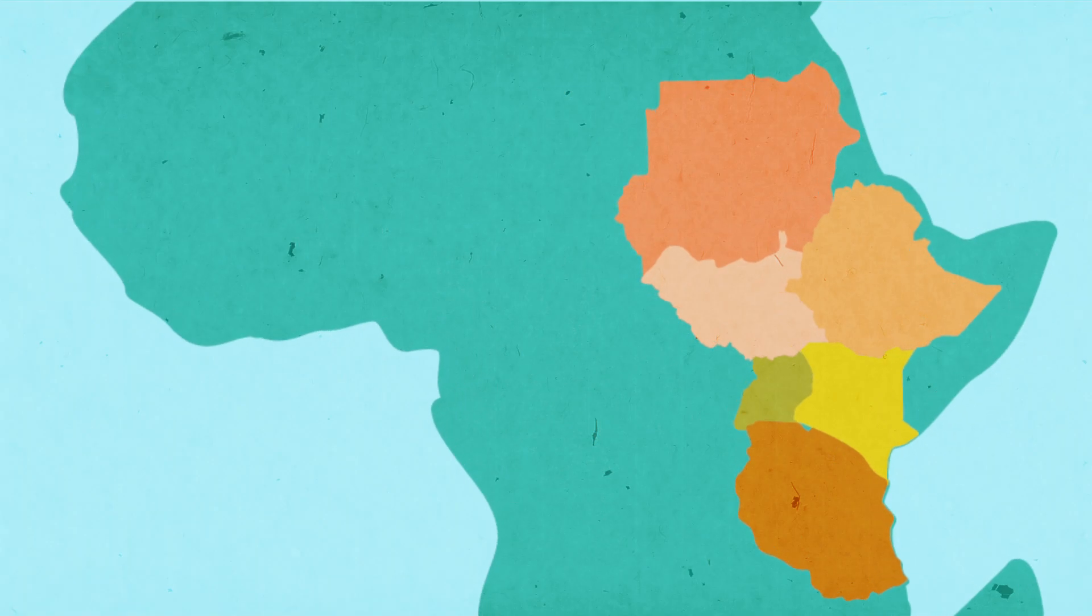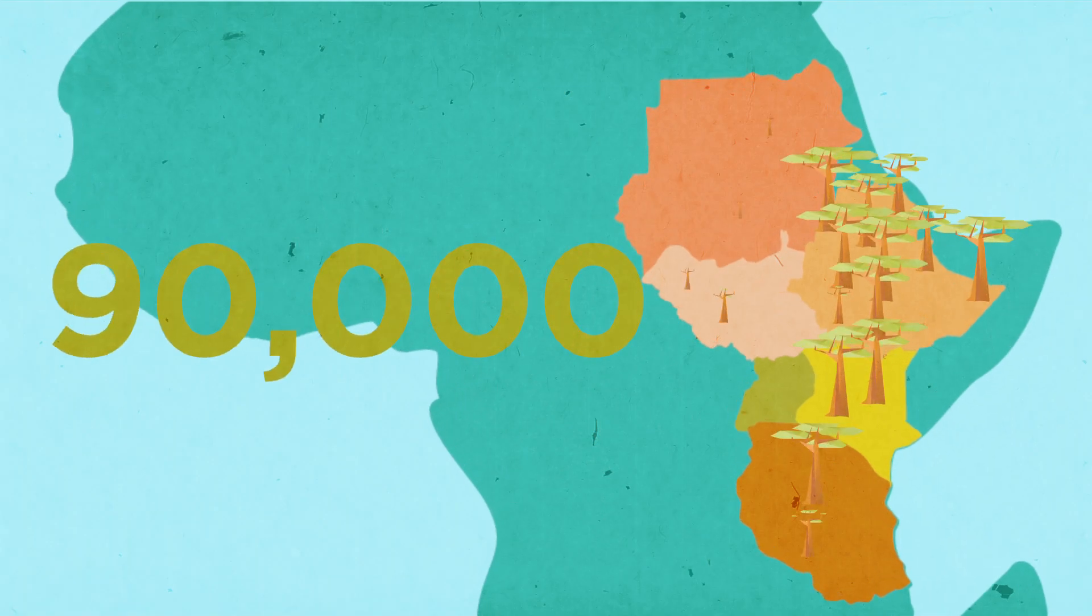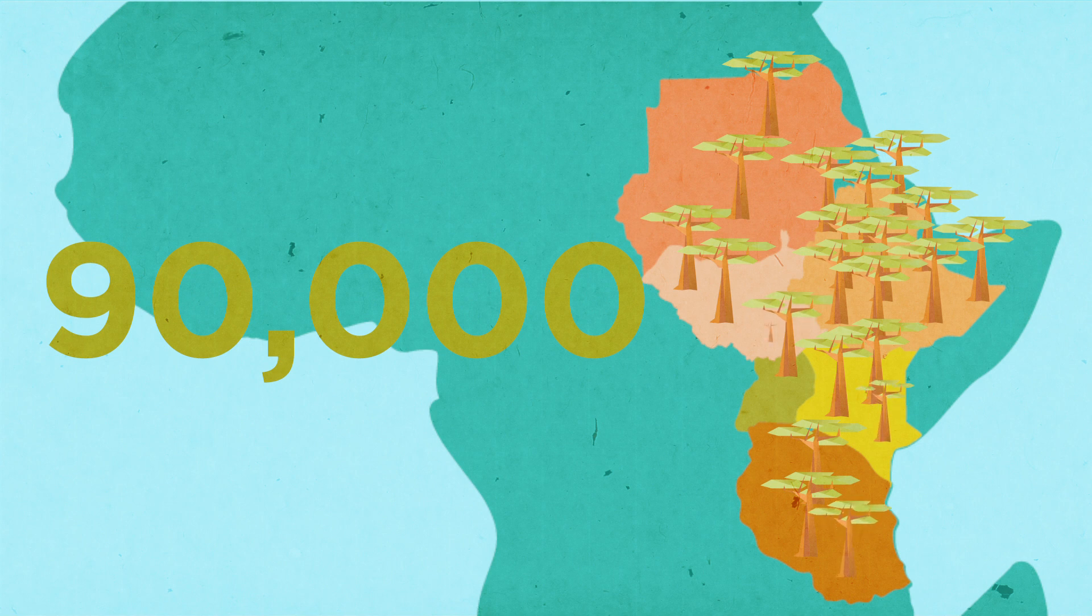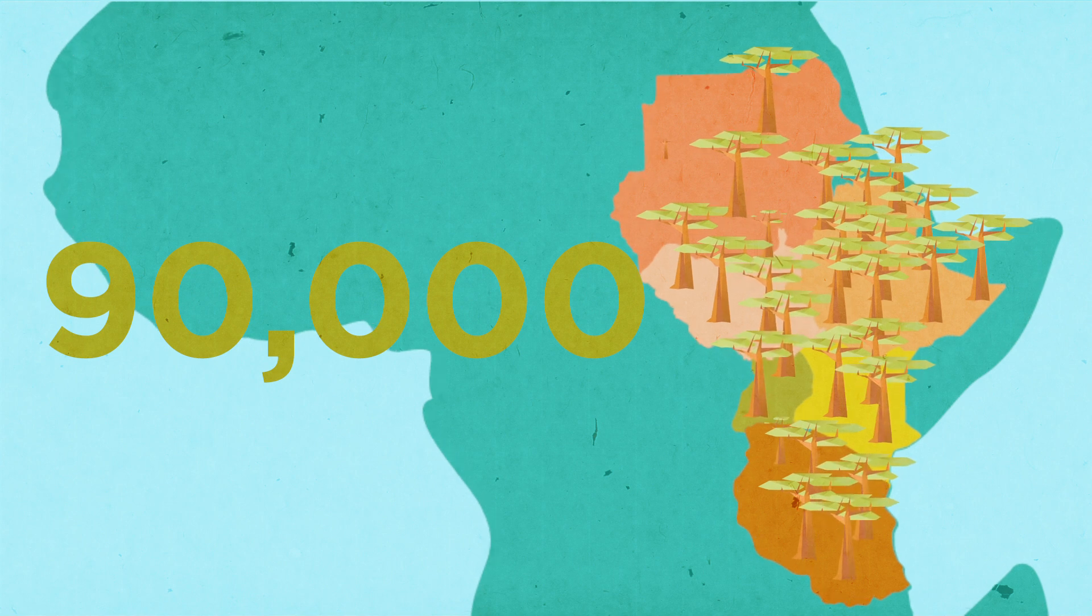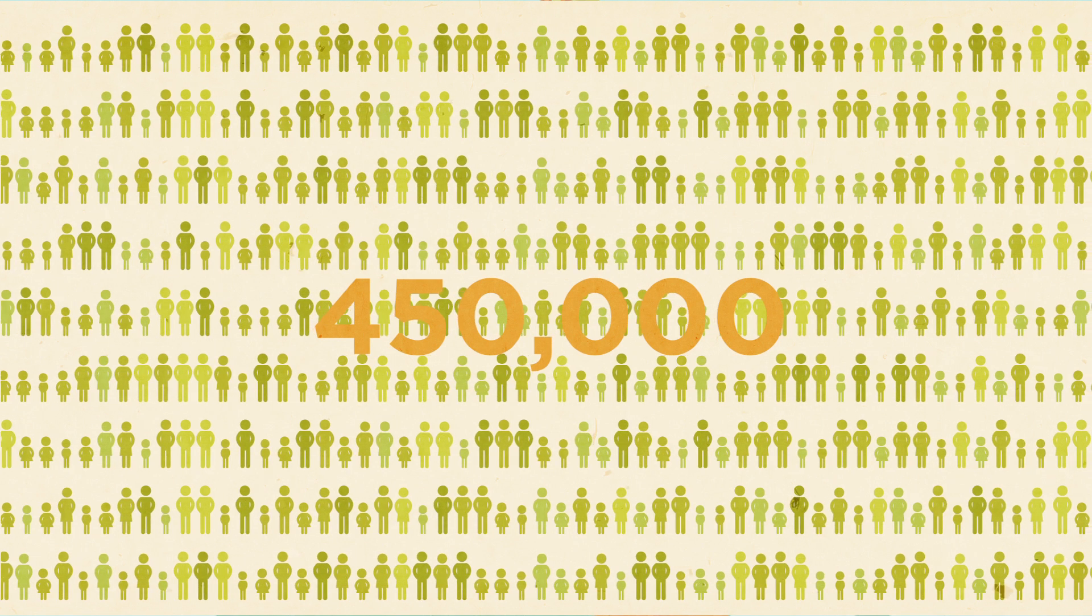In less than a decade, CRS has helped more than 90,000 families to build an Arborloo in East Africa. That is more than 450,000 people.